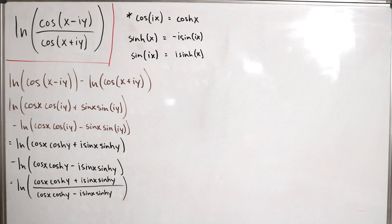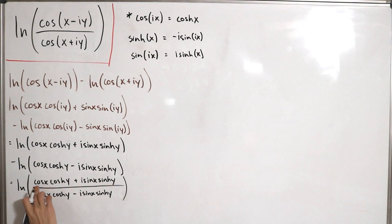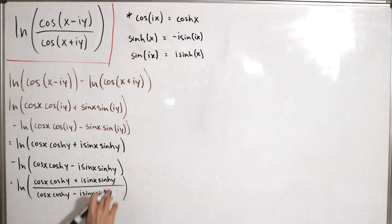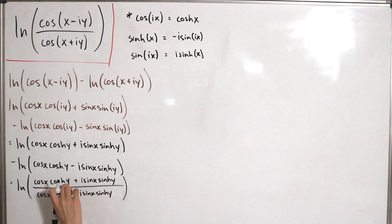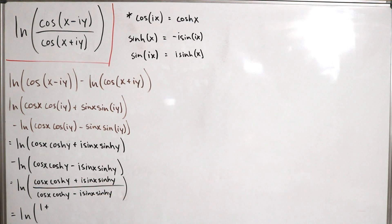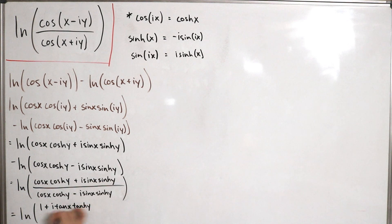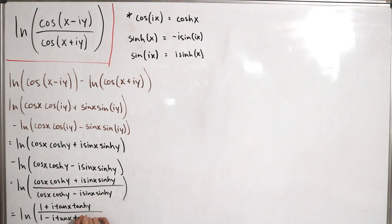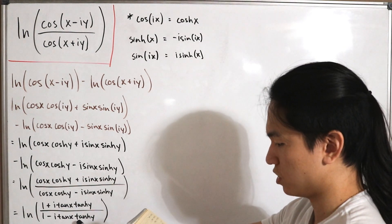Next, we divide both numerator and denominator by cos(x)·cosh(y). The leading terms become 1, and dividing sin(x)/cos(x) gives tan(x), while sinh(y)/cosh(y) gives tanh(y). So the expression becomes ln of (1 plus i·tan(x)·tanh(y)) divided by (1 minus i·tan(x)·tanh(y)).